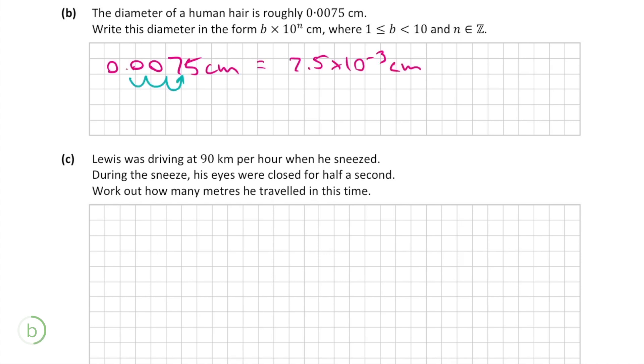In this case we have to move the decimal point 3 places to the right which gives us 7.5 but in this case it's by 10 to the power of minus 3 since we moved the decimal point to the right this time, not to the left.